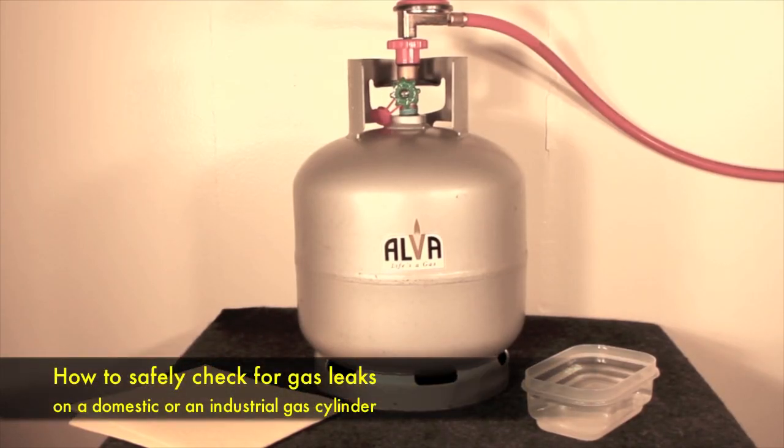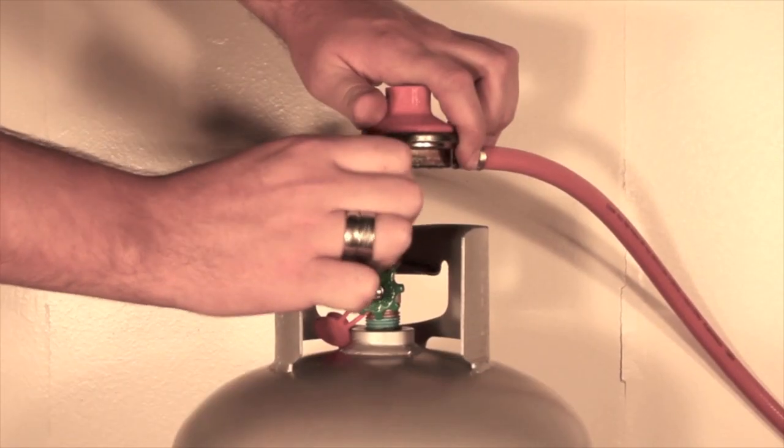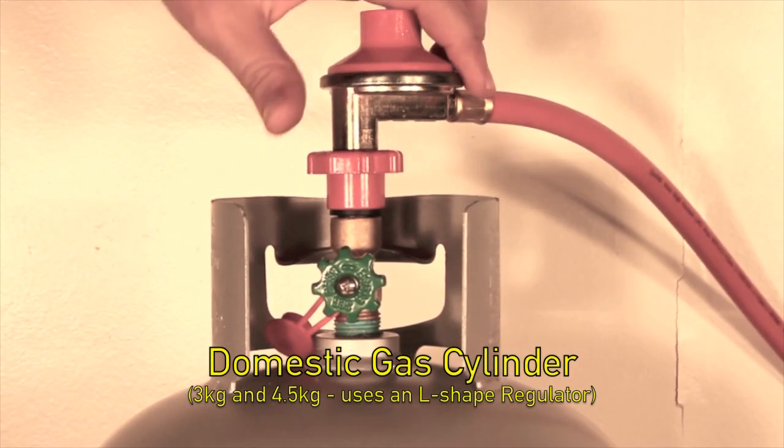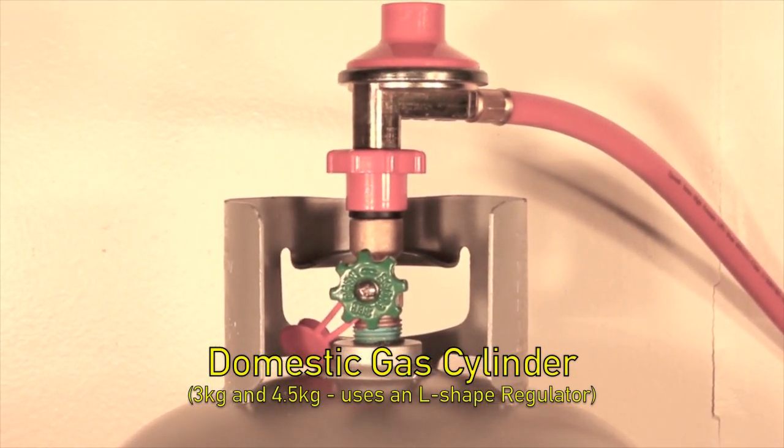How to safely check gas leaks on a domestic or an industrial gas cylinder. Connect your appliances to the cylinder valve and tighten by hand. Do not use a spanner or pliers to do this.